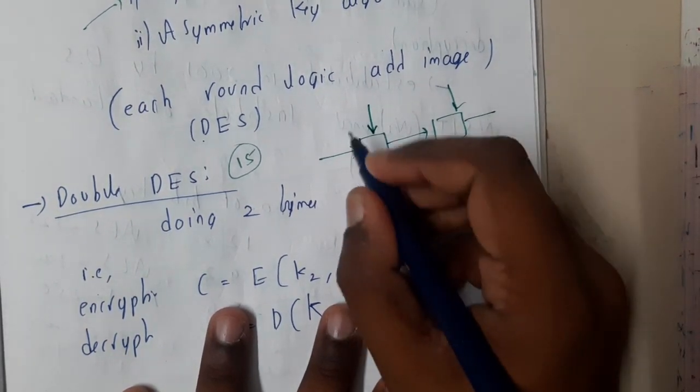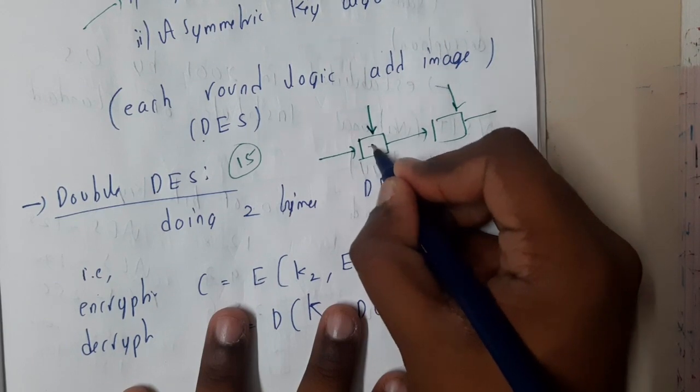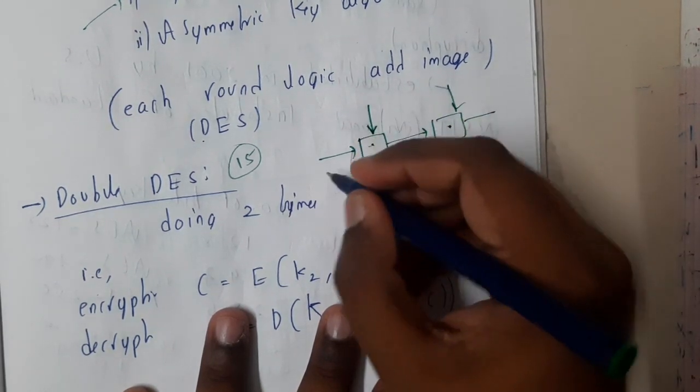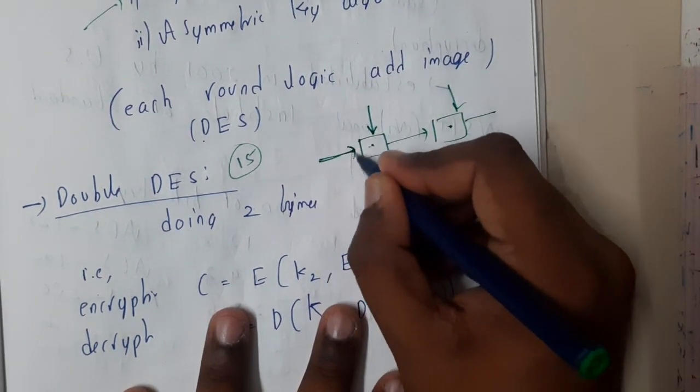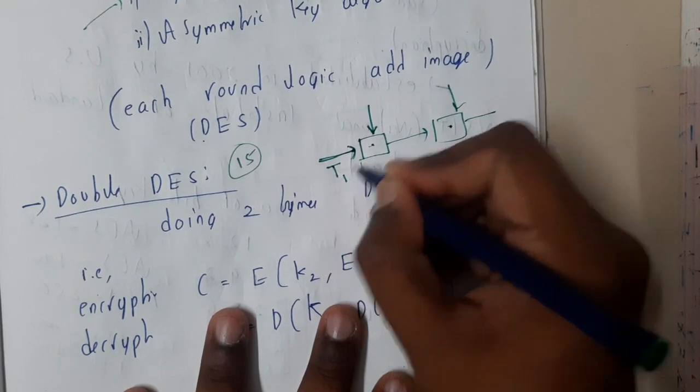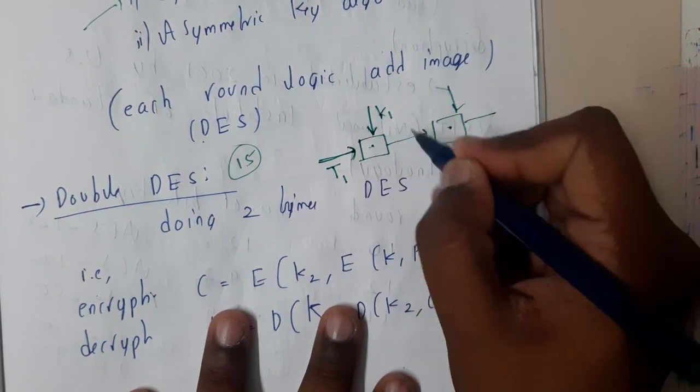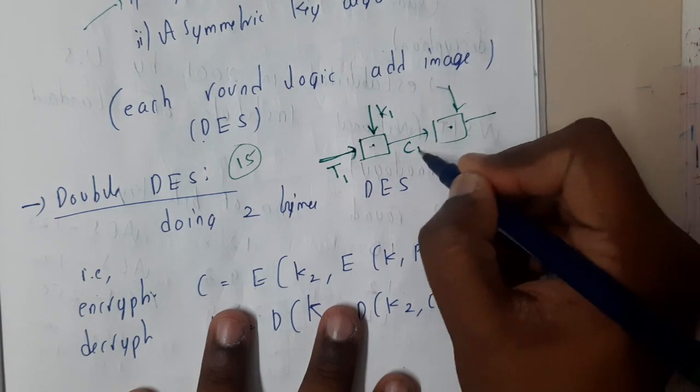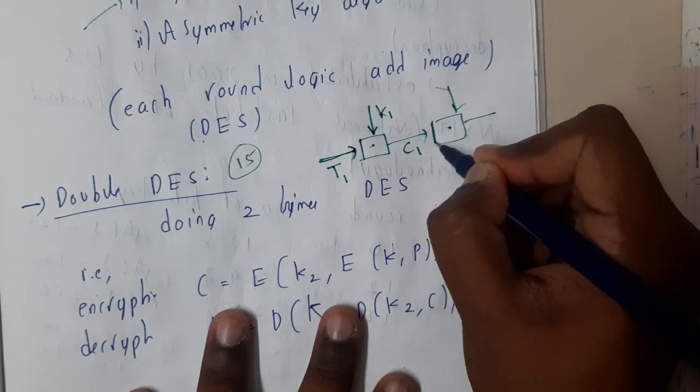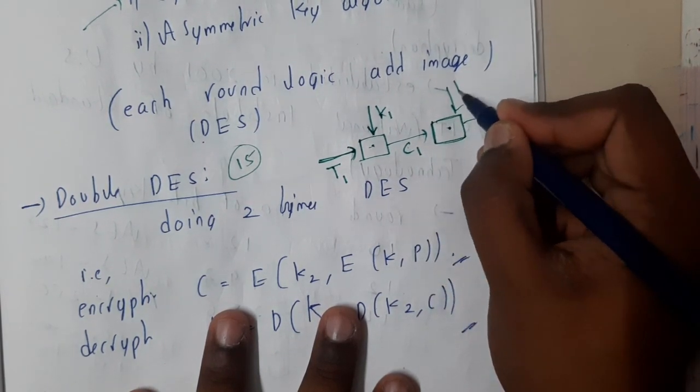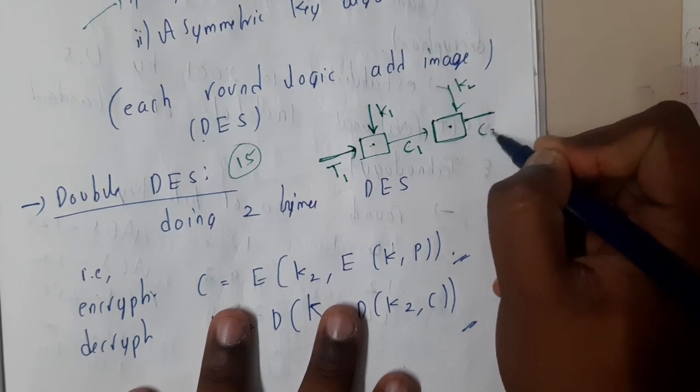Please concentrate, this is really easy. Here your DES algorithm is there and here also your DES algorithm is there. First you will be having your text T1, with key 1 you will be combining it to form C1, cipher text 1. Again this cipher text 1 will be given input to the second one. Here you will be using key 2 and you will be getting the output as C2.